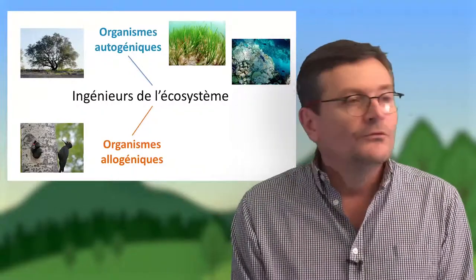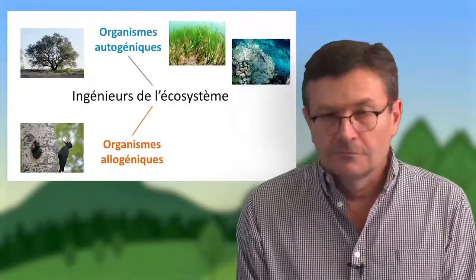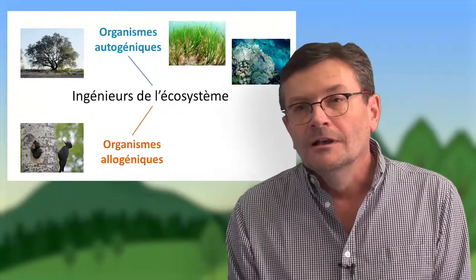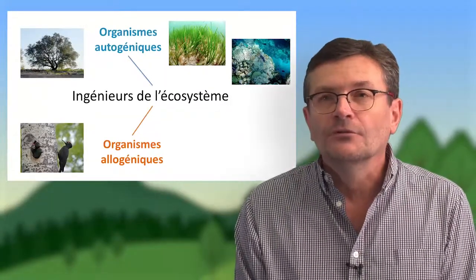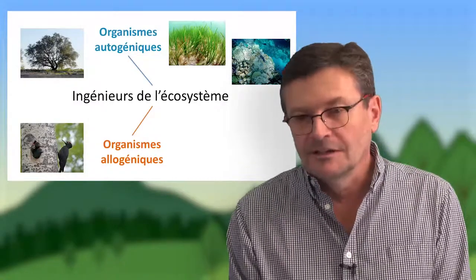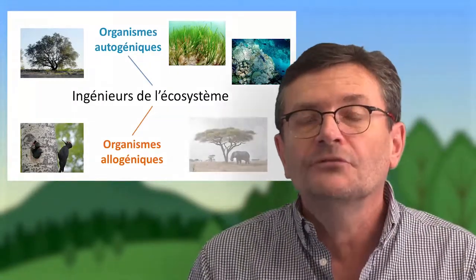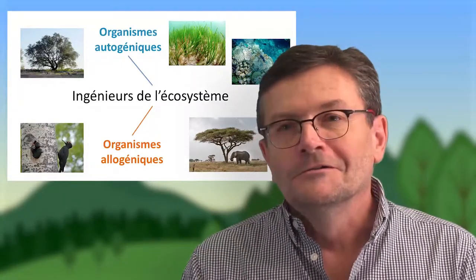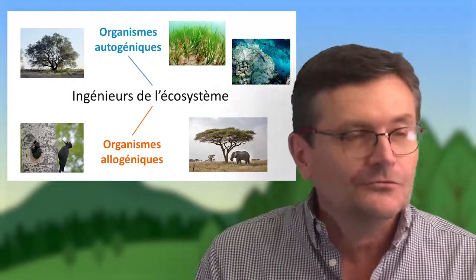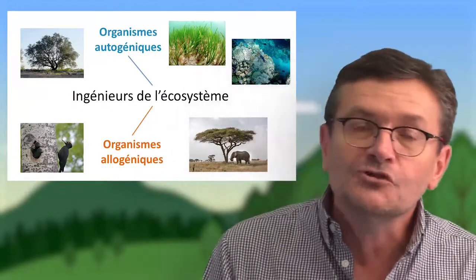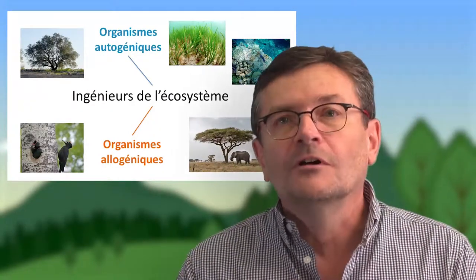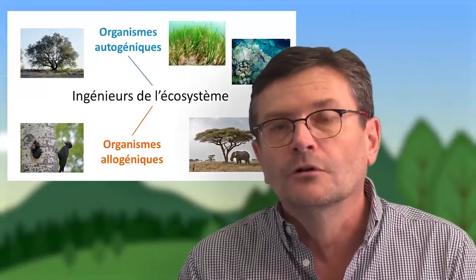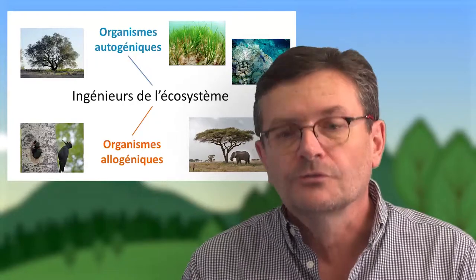La macrofaune benthique dans les milieux marins, fouisseuse, va augmenter le taux d'oxygène dans les sédiments et donc modifier, dans un sens favorable, les conditions d'activité de la microflore de ces sédiments qui dégradent la matière organique. Et puis on a également l'éléphant qui change la densité des arbres, ce qui est souvent un effet très délétère sur la composante arbre, ce qui change également dans un sens favorable la masse des herbacées et change l'intensité des feux, qui deviennent plus violents quand on a une diminution des arbres.